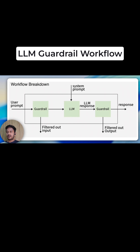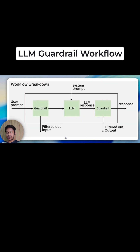If it passes, the LLM basically generates the response. LLM response generation happens, but again, there is a guardrail sitting in between the LLM response and then the response that is going out to the user.